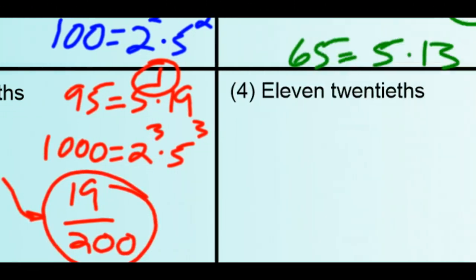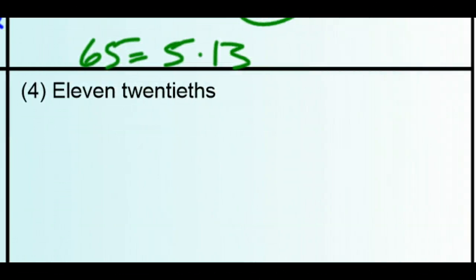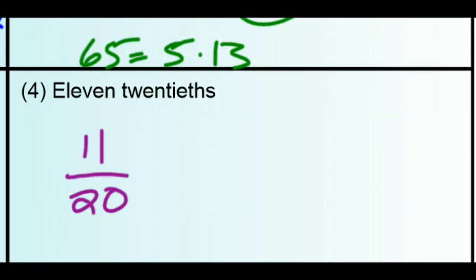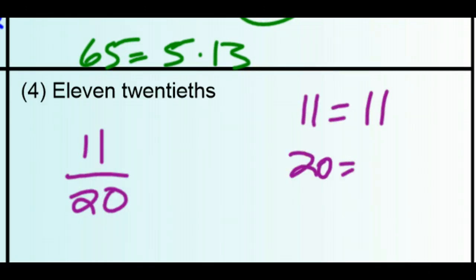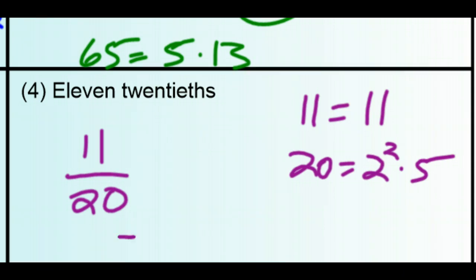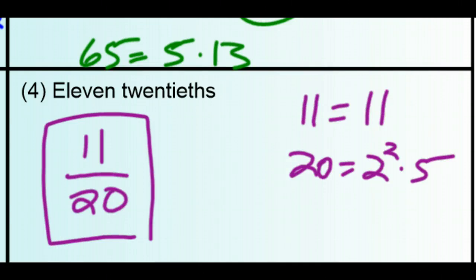And finally, for 11 over 20: if we try to find the GCF, we find that 11 is prime, and 20 is 2 squared times 5. There are no prime factors of 20 that are also a prime factor of 11, so it turns out that 11 over 20 is actually already in its simplest form.